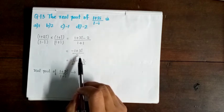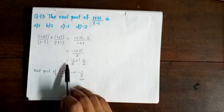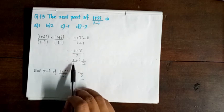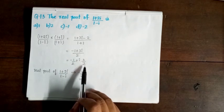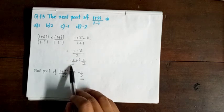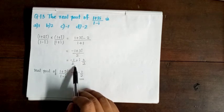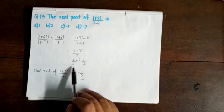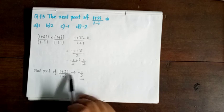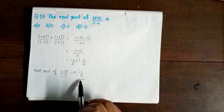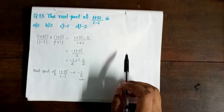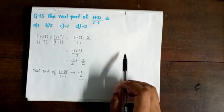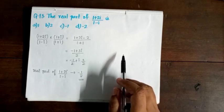This equals -1/2 + i·(3/2). In the form a + bi, the real part of the complex number is equal to -1/2.